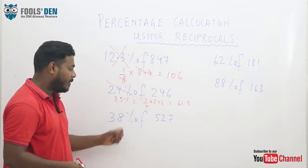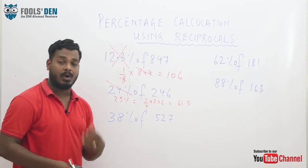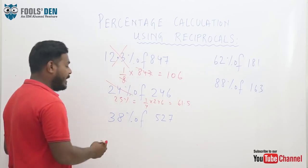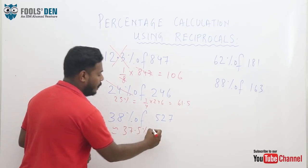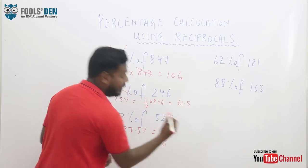38 ke liye, apko again, thoda sa reciprocals ki concept me strong ho na padhega. 38 can be approximated to 37.5 percent, which is nothing but 3 by 8.